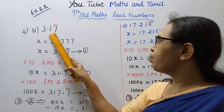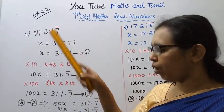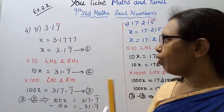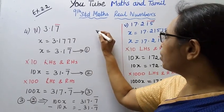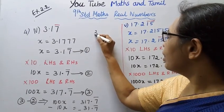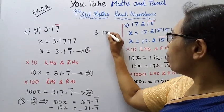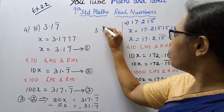The number is 3.17 bar. Now, 3rd subdivision: 3.17 bar.